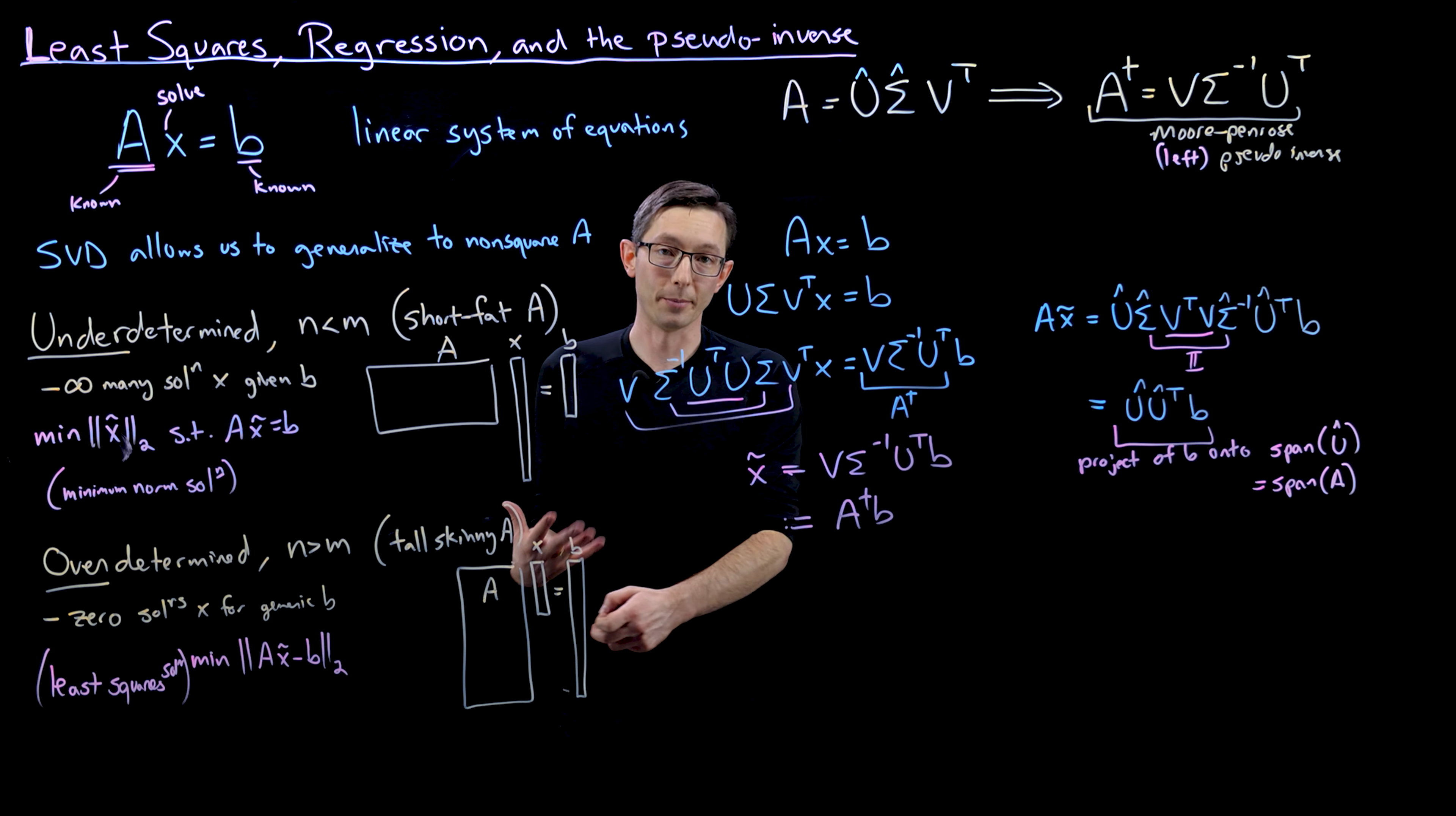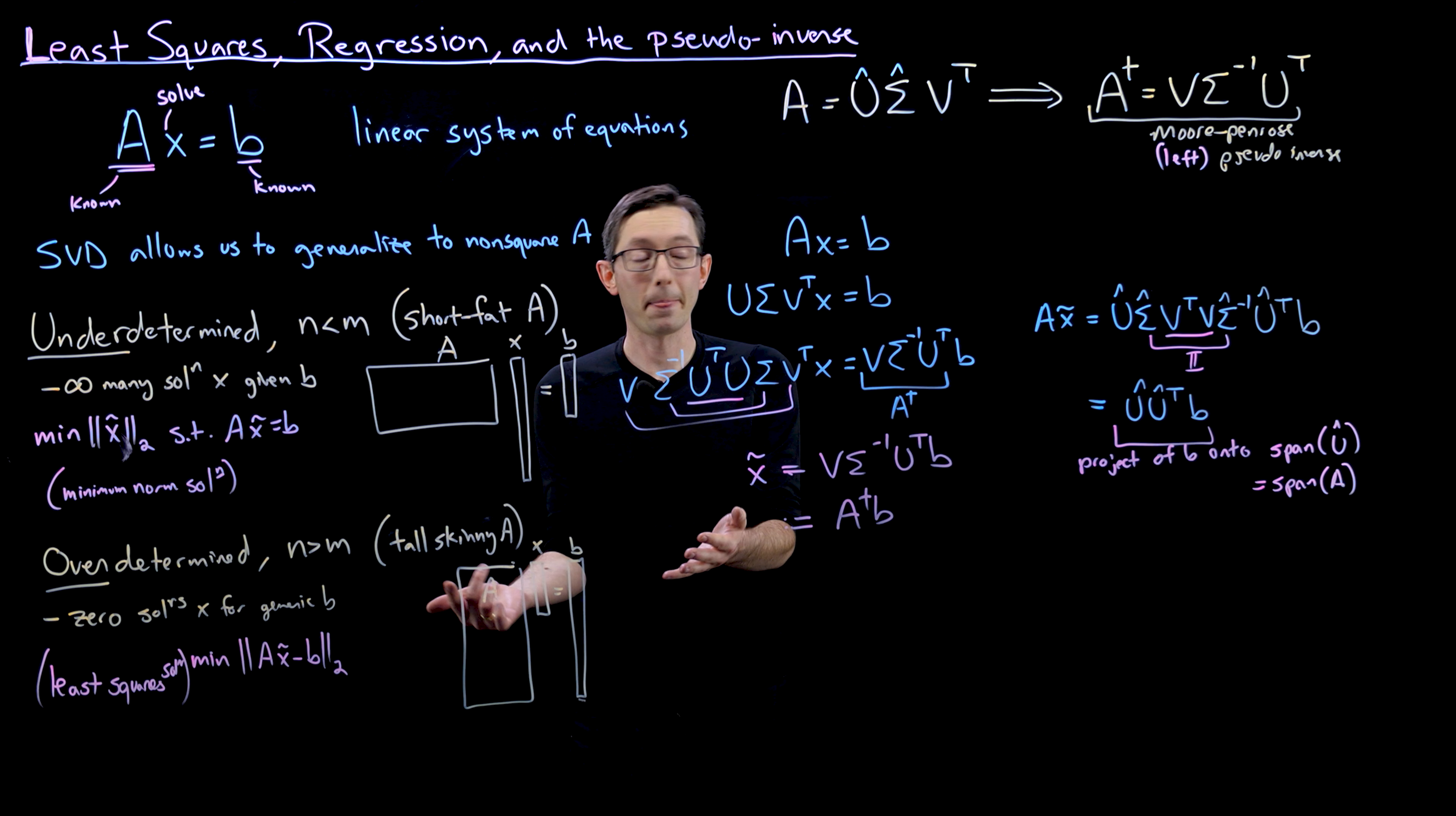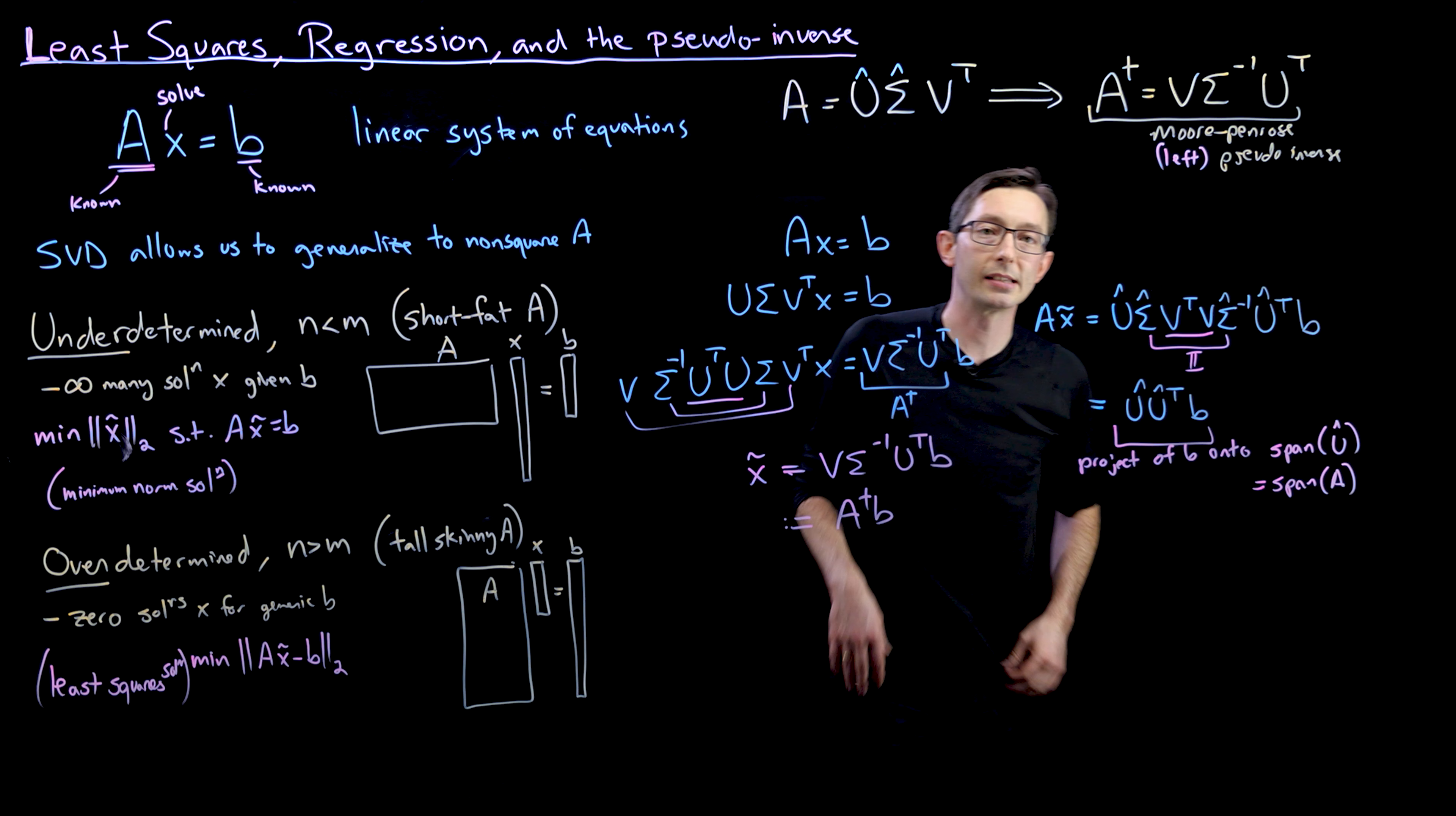Now that's not true in this overdetermined case. Unless B is specifically chosen to be in the column space of A, which it might be, I might choose B to be a linear combination of A, in which case there would be an exact solution. But if I just pick a random B, it'll almost certainly have some component that is not spanned by the vectors in A. And so the best we can possibly do, the best least squares solution X tilde, is taking B and projecting it onto the column space of A. Because that's the best I'm ever going to do with AX in approximating B, is approximating the component of B that's spanned by the columns of A.